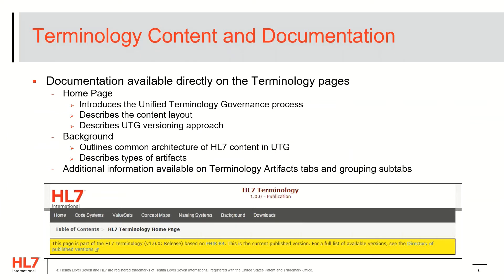The HL7 terminology pages include documentation throughout the tabs and subtabs that provide useful information in the context of each page. The home page introduces the unified terminology governance process for vocabulary maintenance at HL7, and describes the content layout of the site and the unified terminology governance versioning approach. There's also a background tab that describes the architecture of HL7 content and each type of artifact that's browsable on these pages. There's also verbiage throughout the different artifact type tabs, as well as the grouping subtabs, that provide information in context.